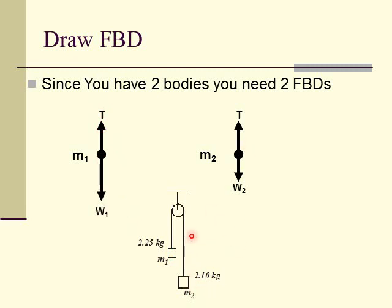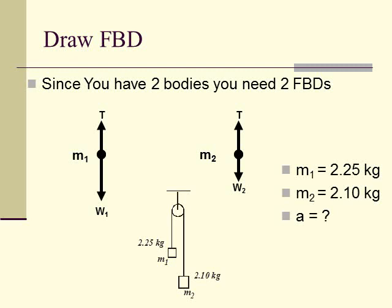The tension force pulling the lighter mass up must be smaller than its weight. For the heavier object going up, tension is bigger than weight. So immediately I can estimate the size of tension — it's less than weight 1 and more than weight 2. It's somewhere in between the weights of those two objects. Now, the third law pairs here: this tension pulling up is really caused by mass 2 trying to go down. This tension pulling mass 1 up is the force on 1 by 2, and the other is the force on 2 by 1 — third law pair forces, assuming the string is massless.